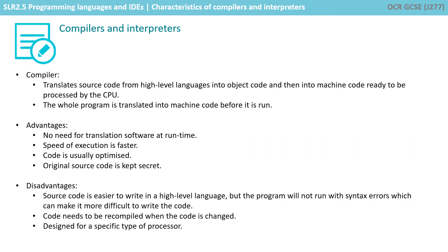So just to recap: a compiler translates source code from high-level languages into object code, and then into machine code ready to be processed. The whole program is translated into machine code before it's run. The advantages are there's no need for further translation at runtime, the speed of execution is faster, and the code is usually optimised.